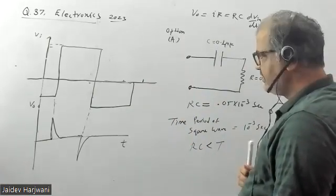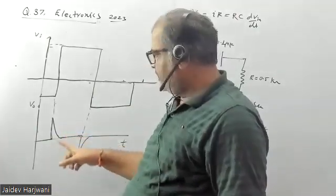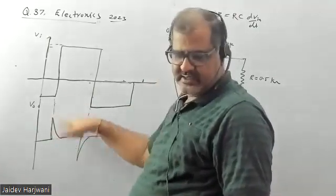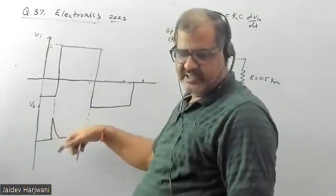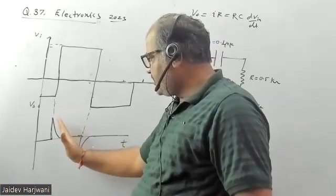Smaller the RC, the sharper the drop. That means it will work as an ideal differentiator. The smaller the RC, the faster it will decay.